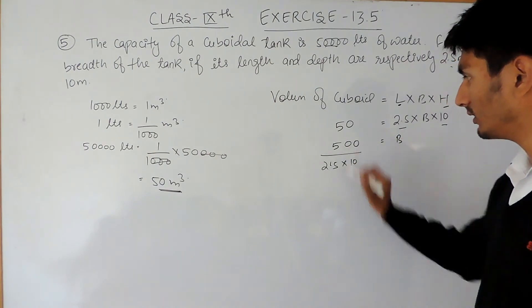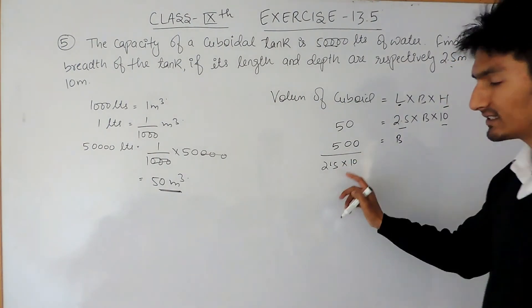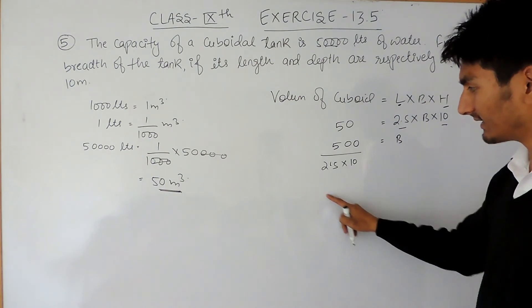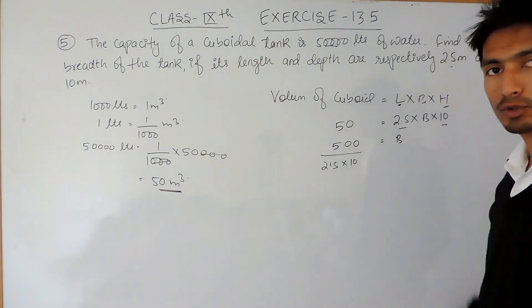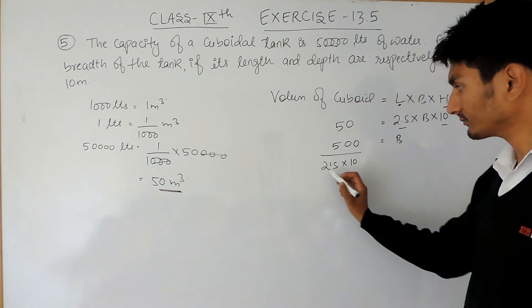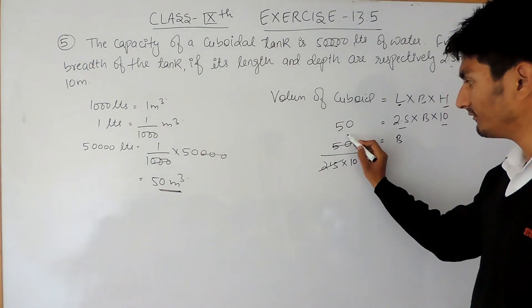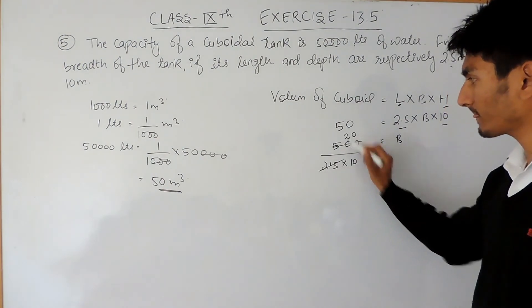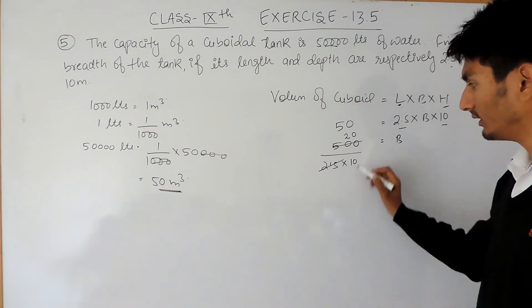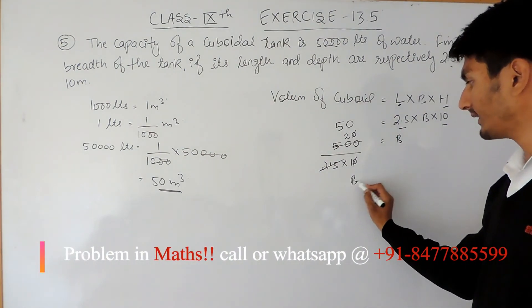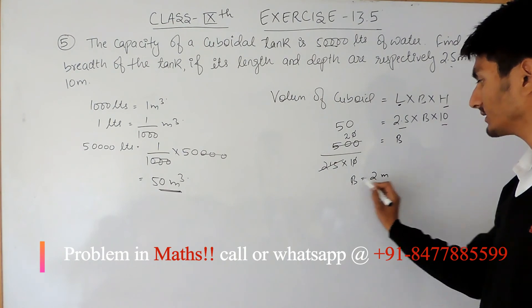Removing this decimal, I can place a zero in the denominator and ultimately this denominator will shift to the numerator. So this can be cancelled 25 times and there will be 1 zero and 1 zero can be cancelled with this zero. So breadth should be 2 meters here.